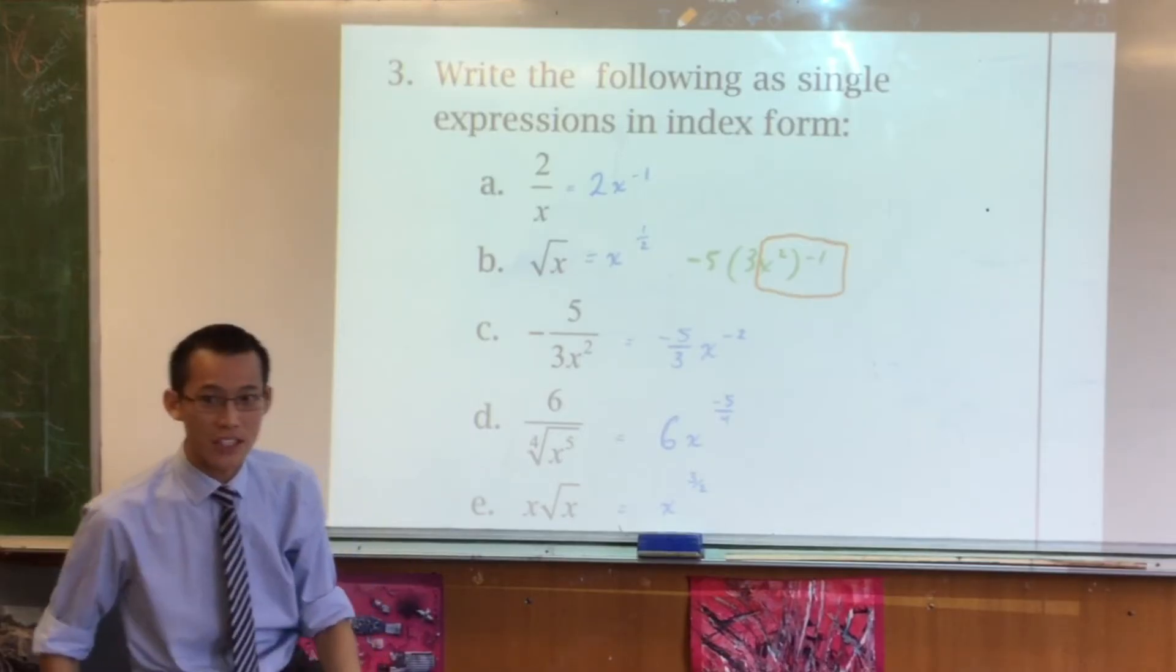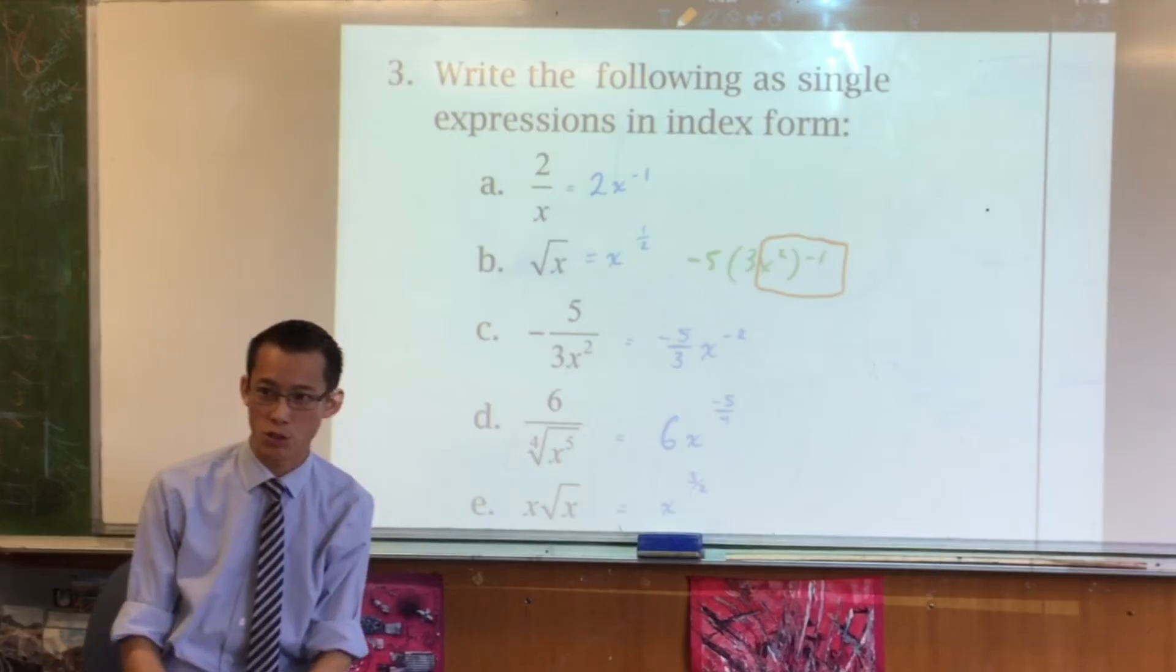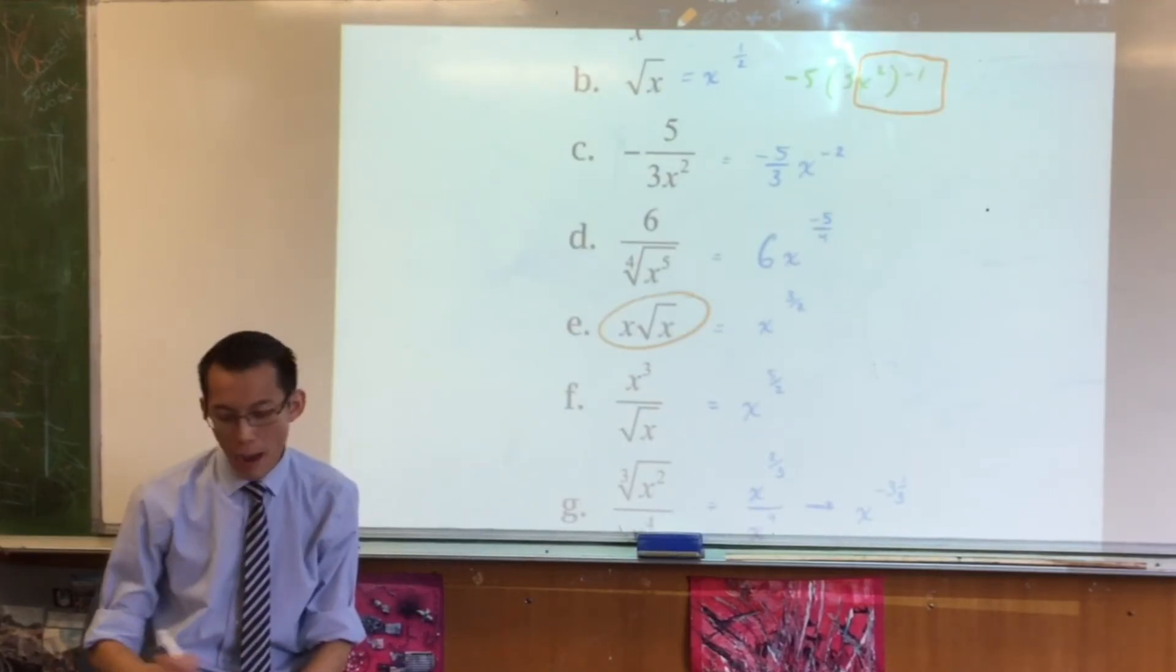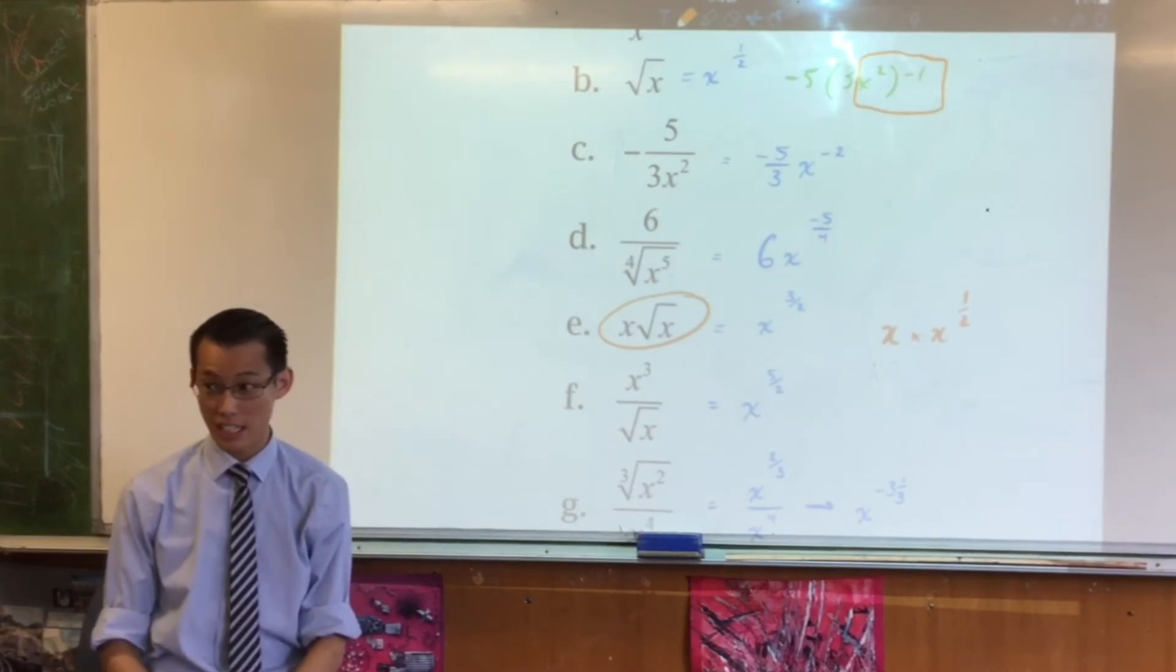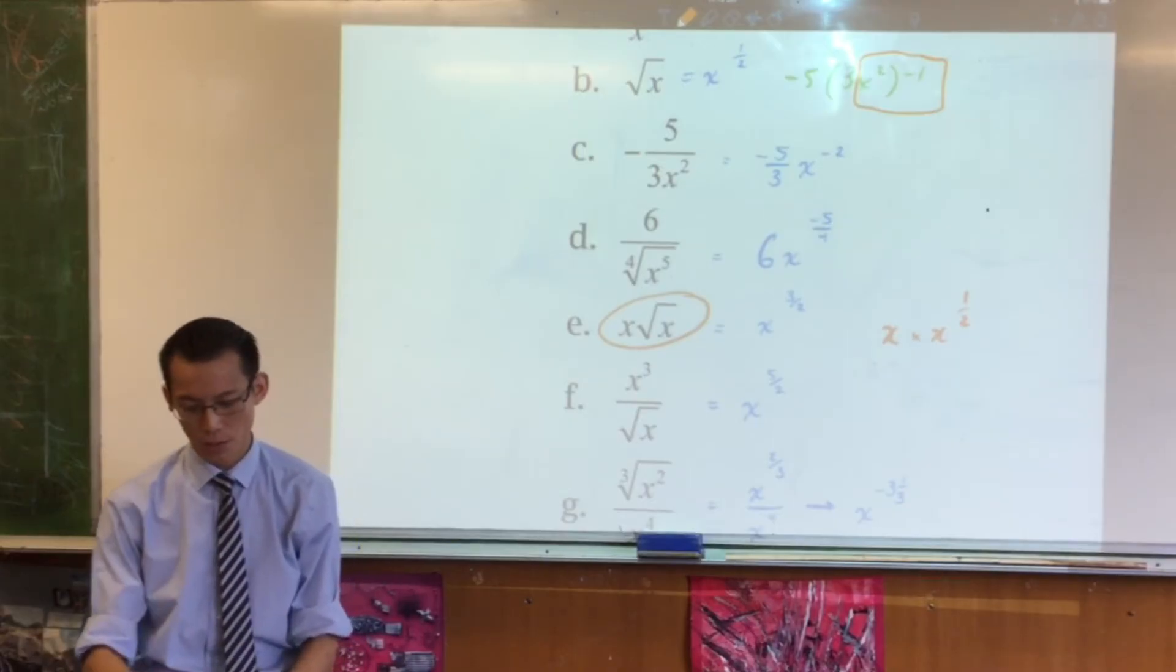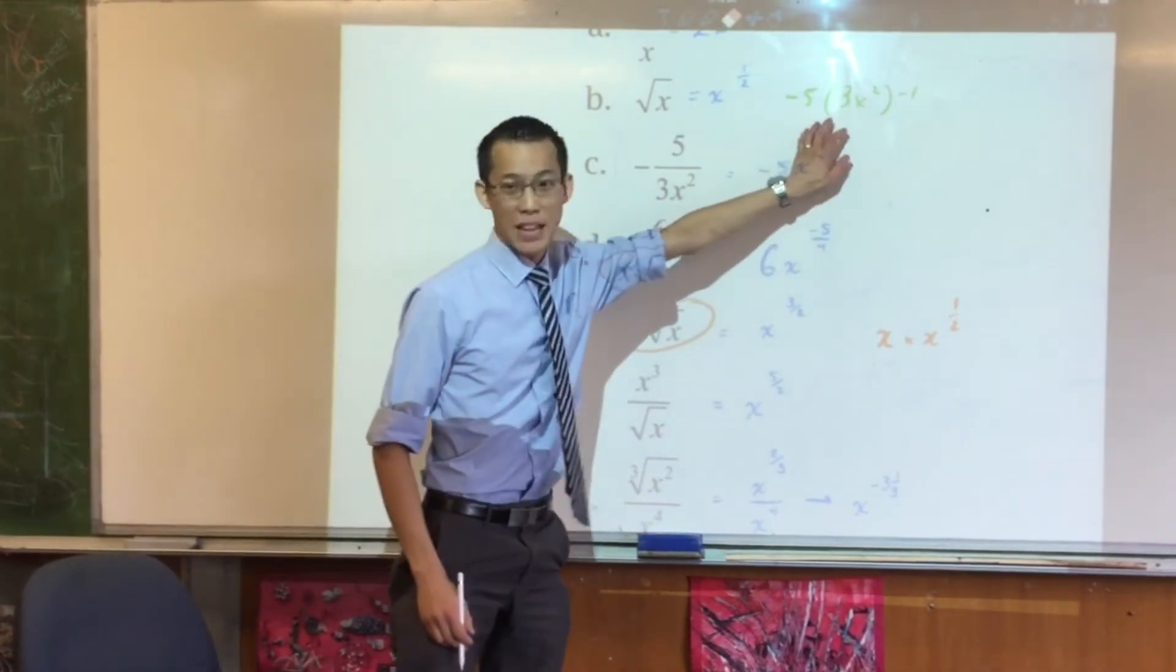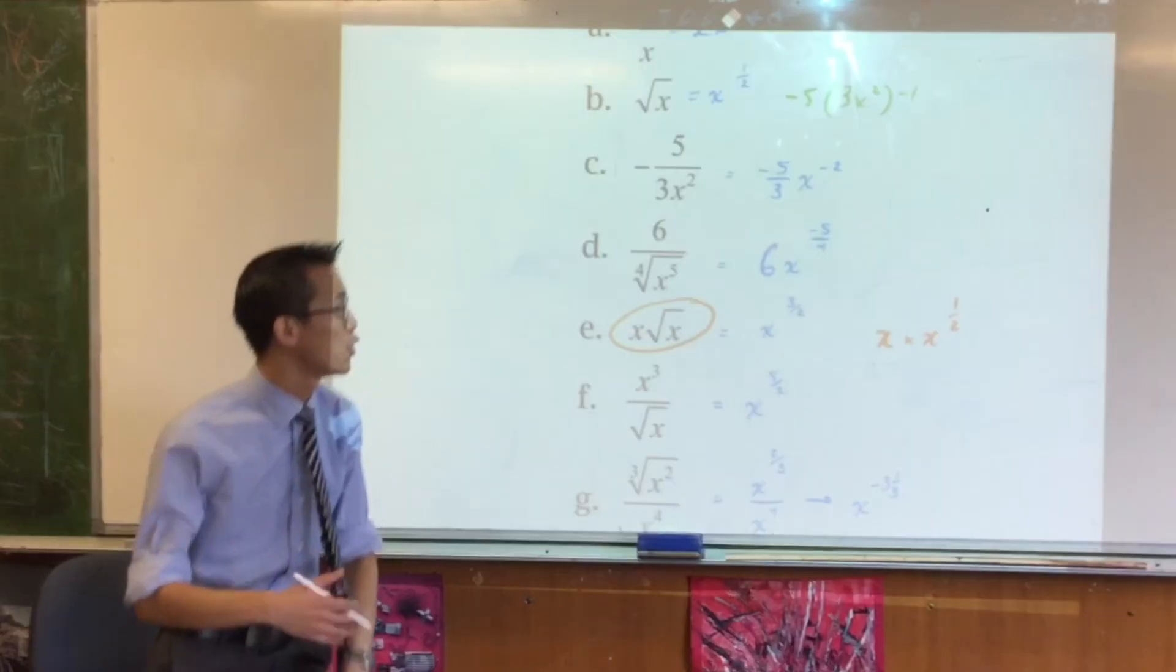The single expressions in index form—you've written that broken apart. Clearly there's a problem with this part here. Right, the question is implying to you, look, you can write that as one thing. And so you should, just like these questions down here are asking you to combine. I wouldn't accept x times x to the power of a half. That's not a single expression in index form. So apart from that, I wouldn't accept that. That's what this question is about: being able to manipulate and simplify that, so therefore you're going to be expected to go a little extra.